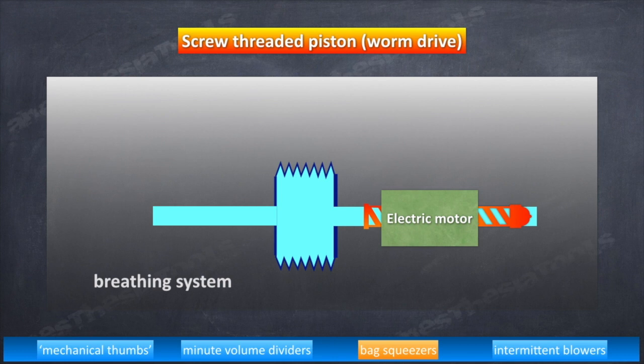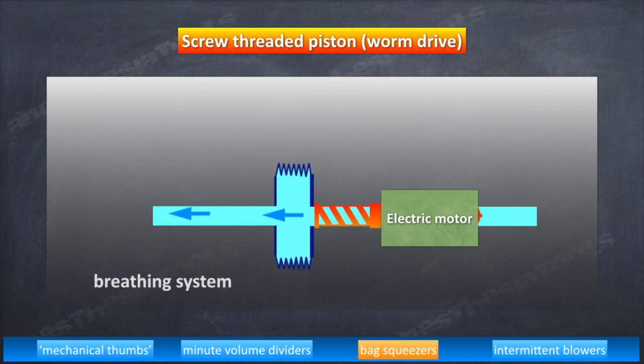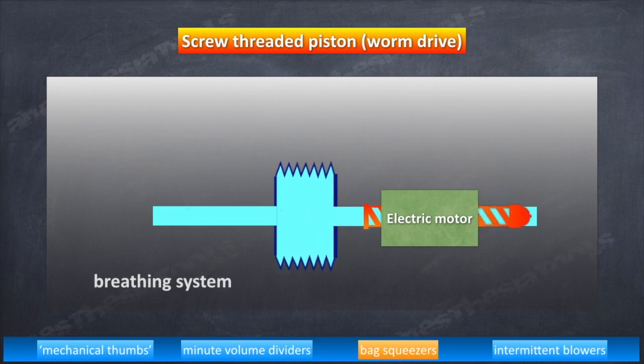Next, worm drive model. Here, bellows travel is produced by a linear travel of a worm gear driven by an electric motor. The speed of the motor can be altered both in inspiration and in exhalation to produce a variety of flows. This is a method used in Dräger E series of ventilators.